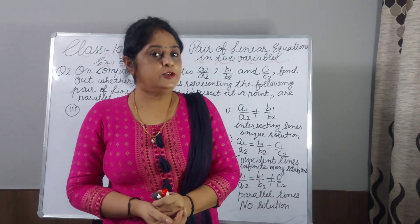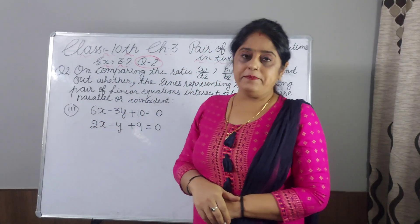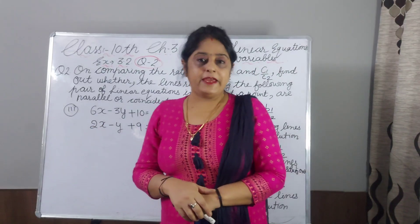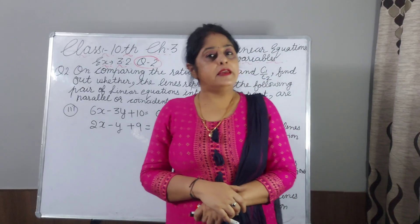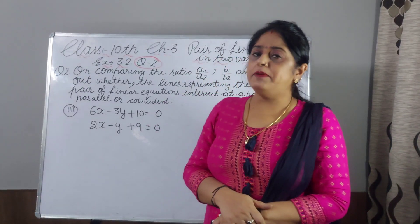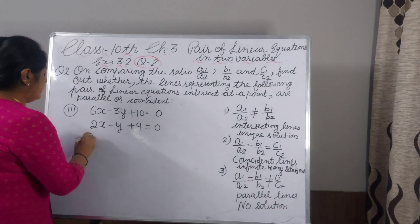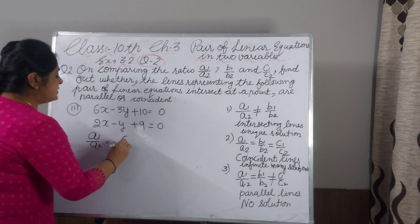Now question number 2, third part. Equation is 6x minus 3y plus 10 equal to 0, and 2x minus y plus 9 equal to 0. We will compare A1 by A2, B1 by B2 and C1 by C2. Now A1 by A2, 6 upon 2.